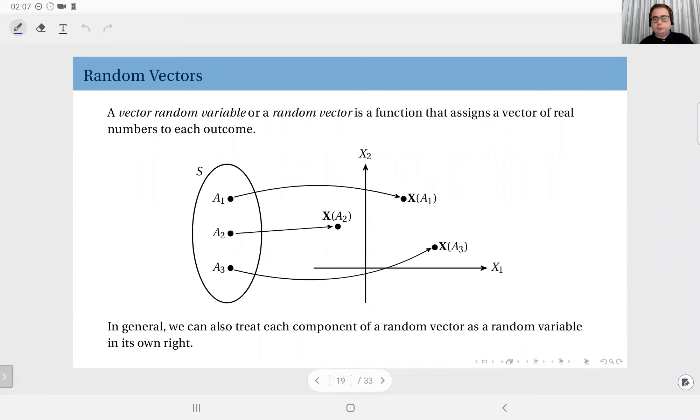That concludes our discussion of single random variables, and at this point we are moving to random vectors or vector random variables. First things first, let's start with the definition. A vector random variable or random vector is a function, similar to a random variable, that assigns a vector of real numbers to each outcome in a random experiment.